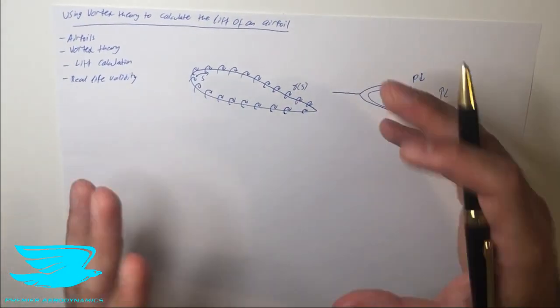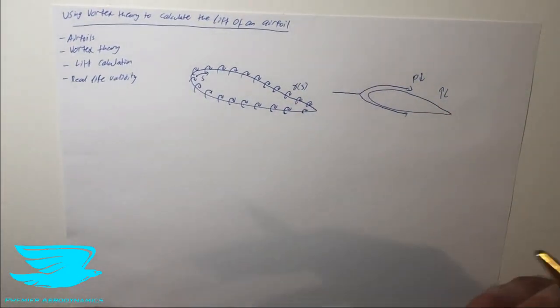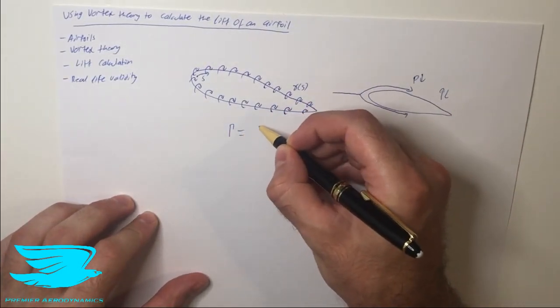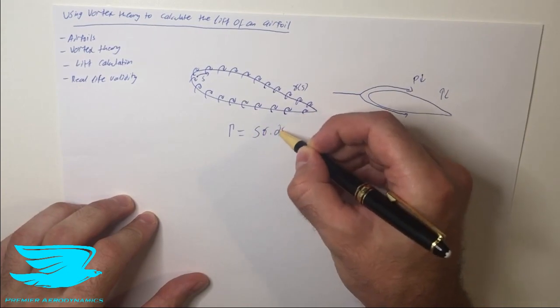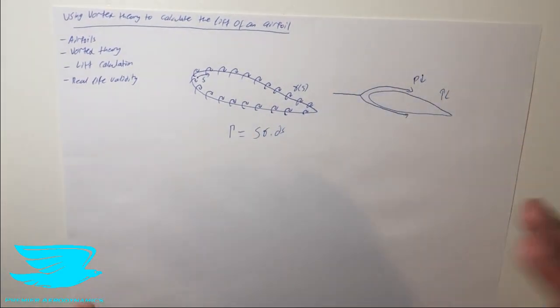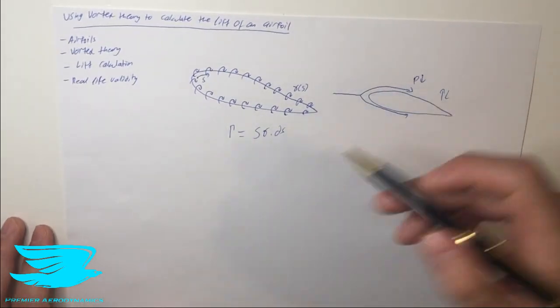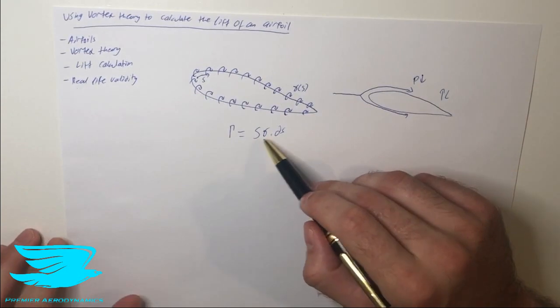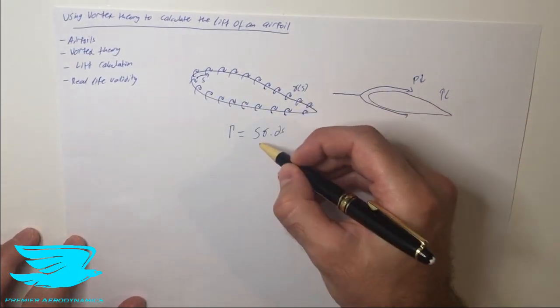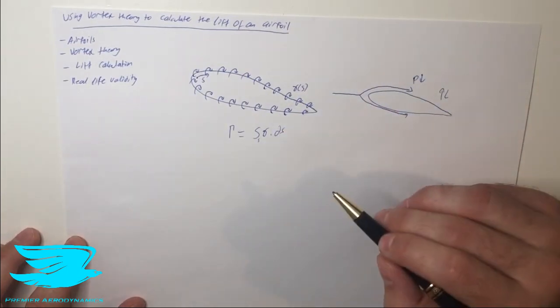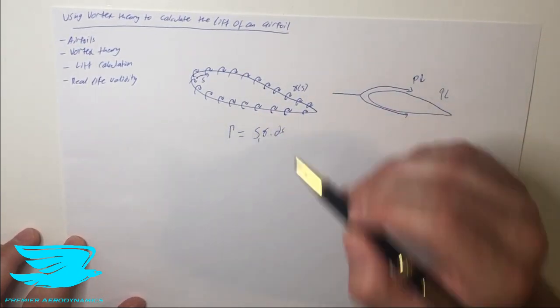If we know gamma we can then integrate it to find out what big gamma is. So let me write this equation here which we saw effectively in that last video. If you haven't checked out that video on circulation check that out because this will be more clear. And we have big gamma which is the total circulation of this airfoil equals the integral around this surface, around this closed loop here, of little gamma with ds. If we do that we can find out what big gamma is.